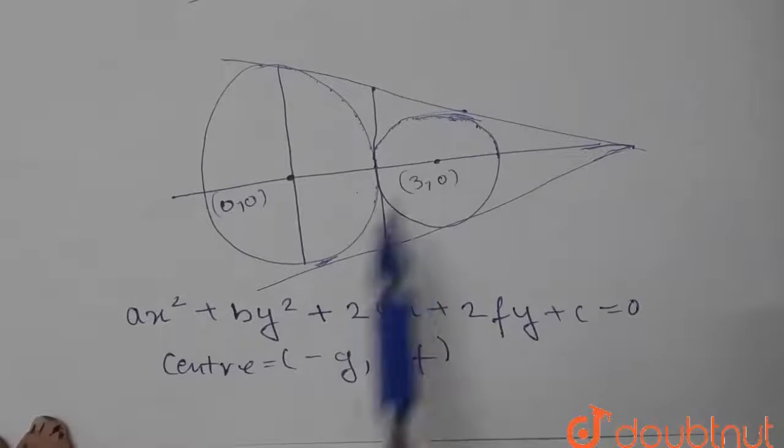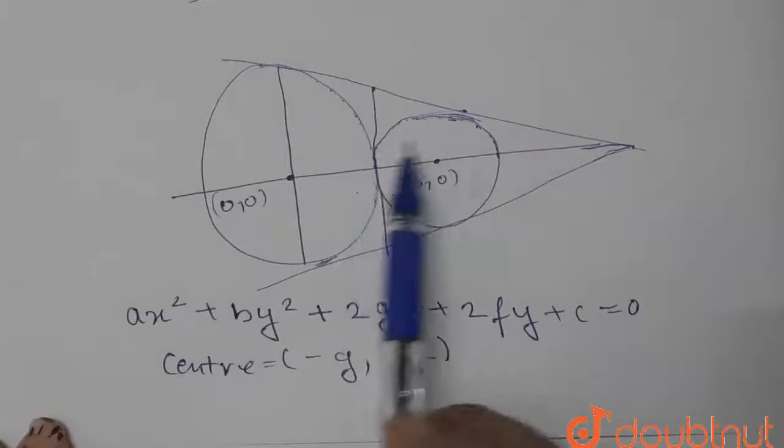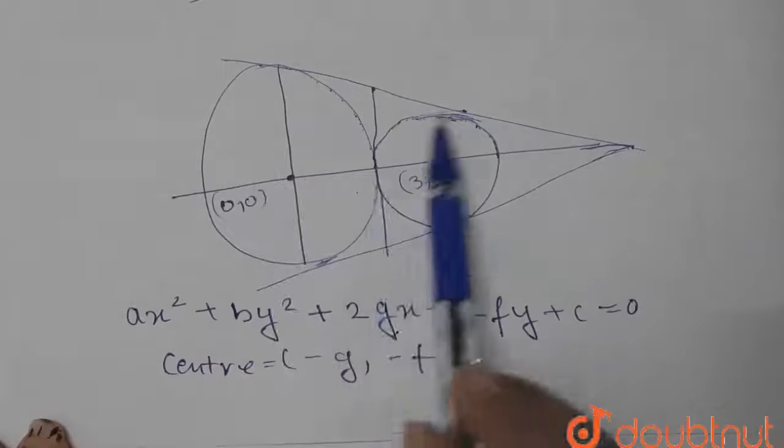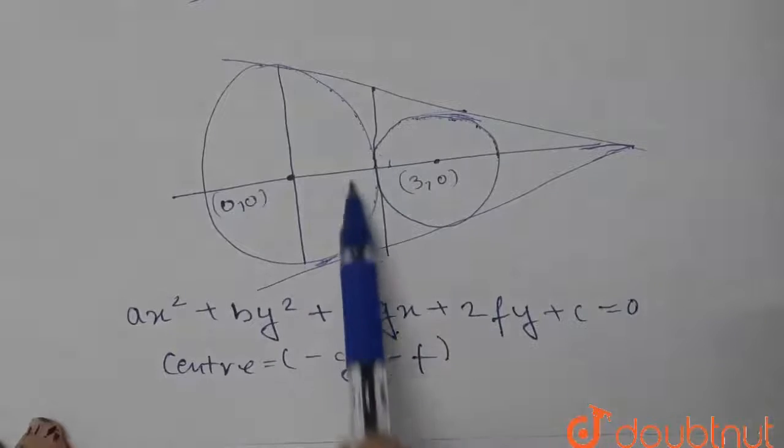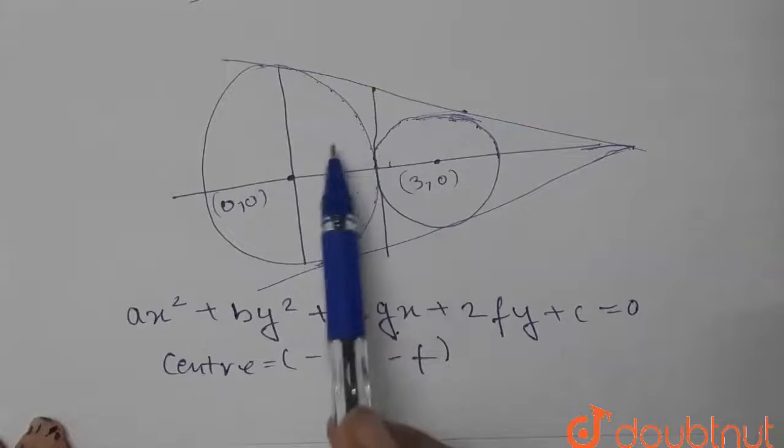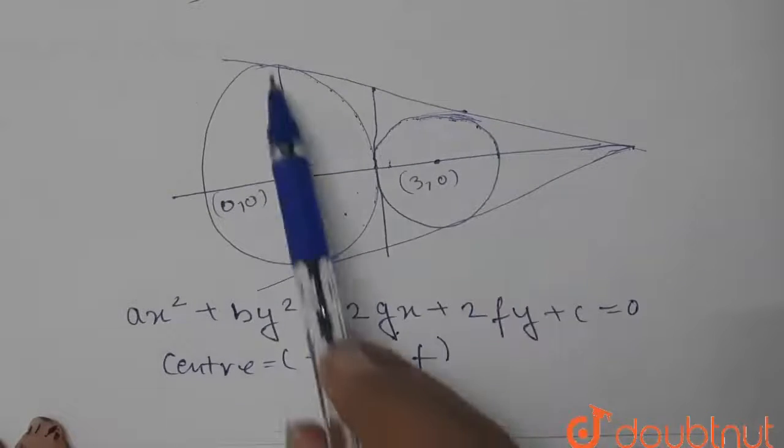Now let us look at the diagram. Look at the diagram and see that these two circles touch each other externally. The circles touch each other externally, and hence the larger circle, that means this circle, is an ex-circle of the triangle.